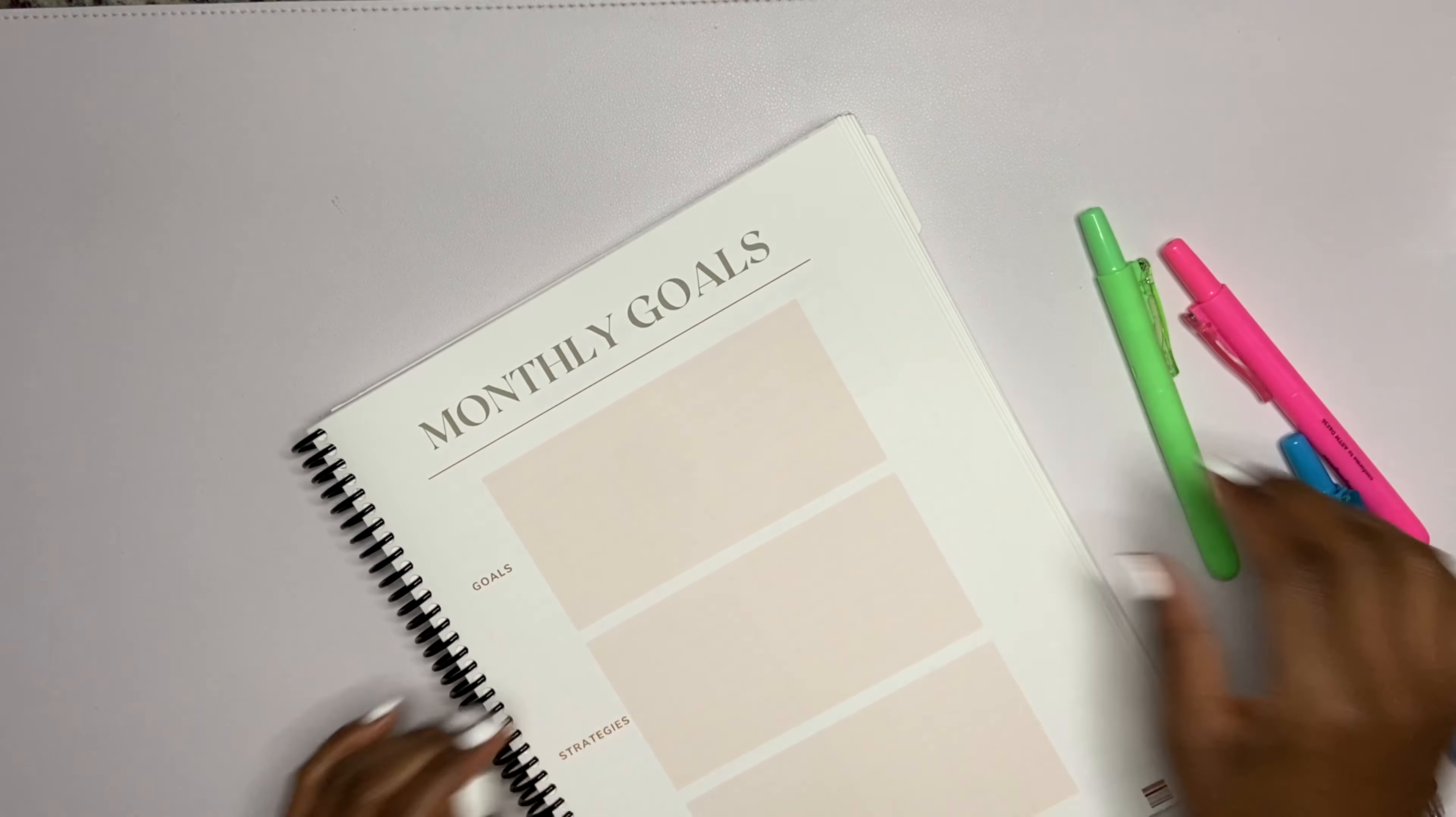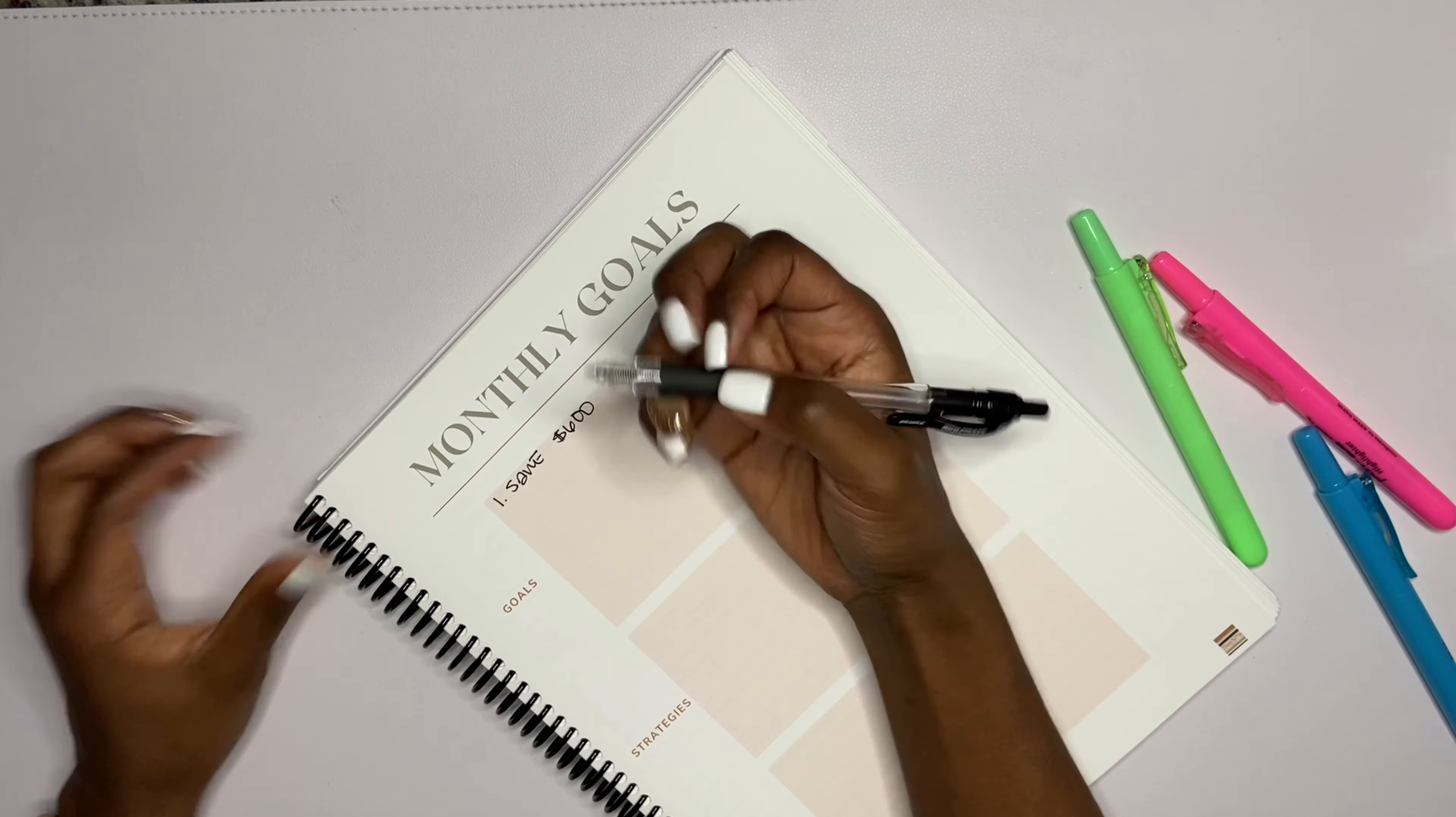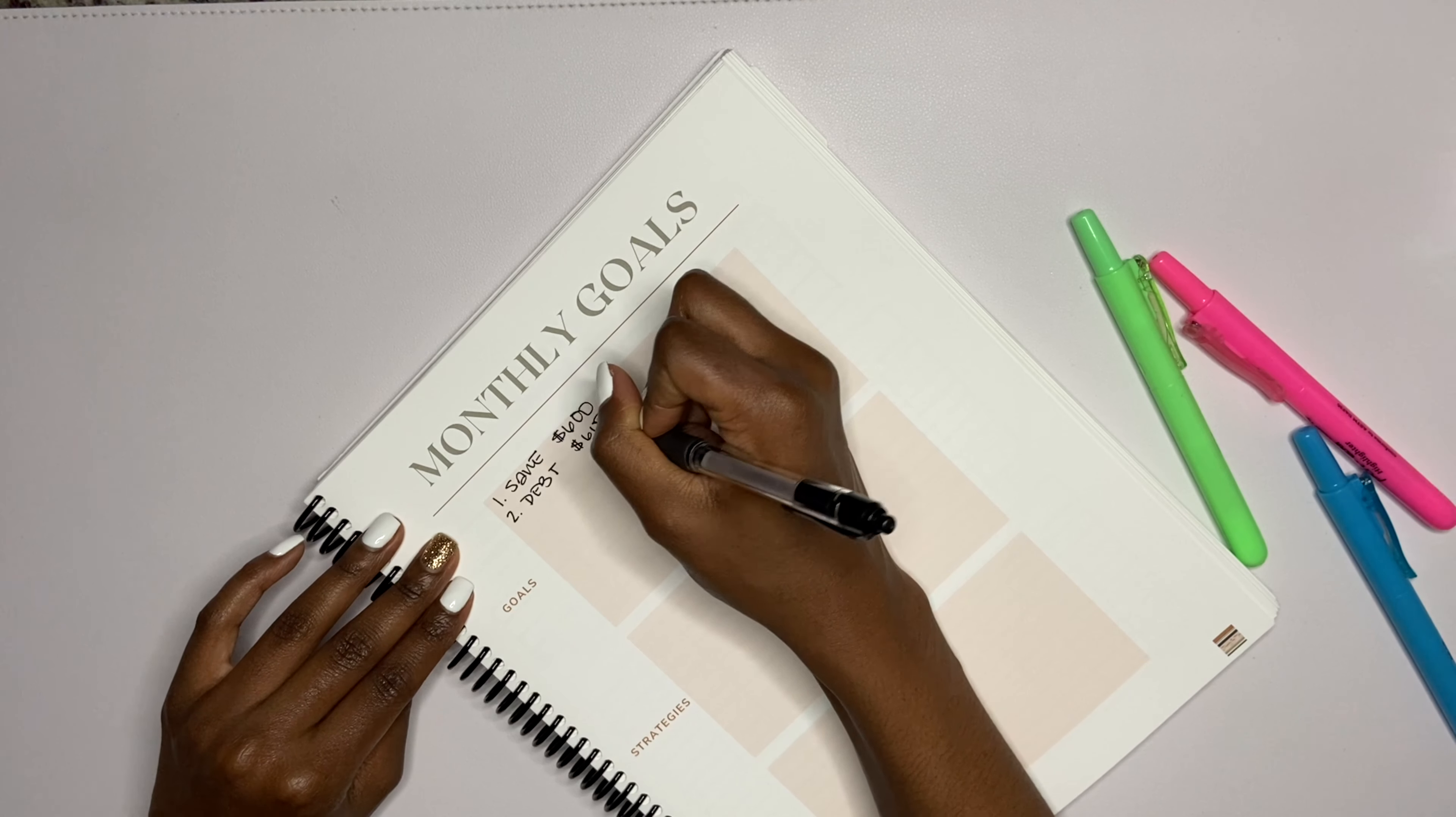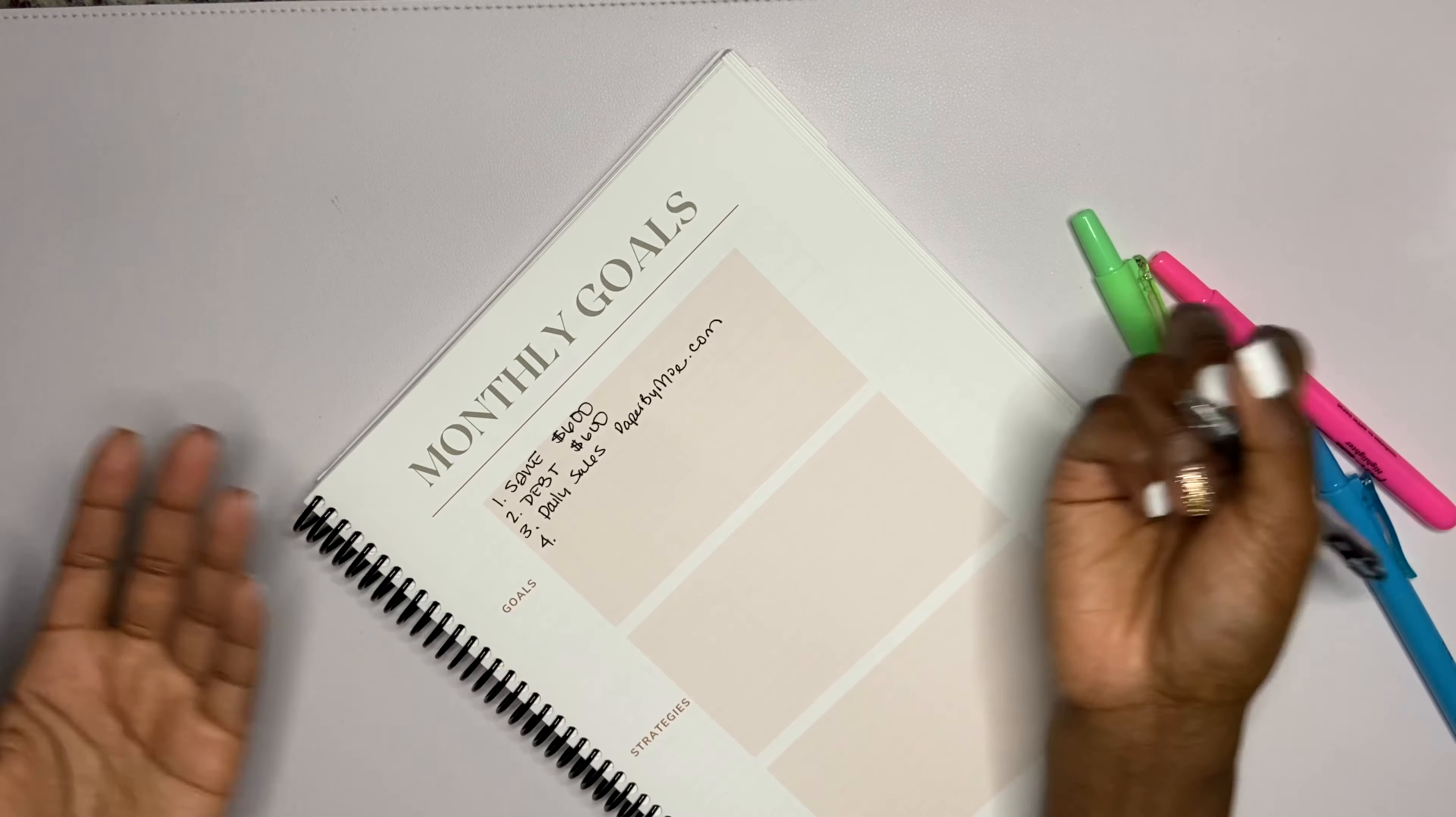Now we have our monthly goals. We have goals, strategies, and extras. First things first, I want to save $600. I really do. I'm trying to have a grown woman savings account. I want to put towards my debt another $600. Daily sales for Paper by Mo - I'm putting the work in. I have been creating TikToks and Reels and getting to it in the morning, or trying to at the very least, God willing.